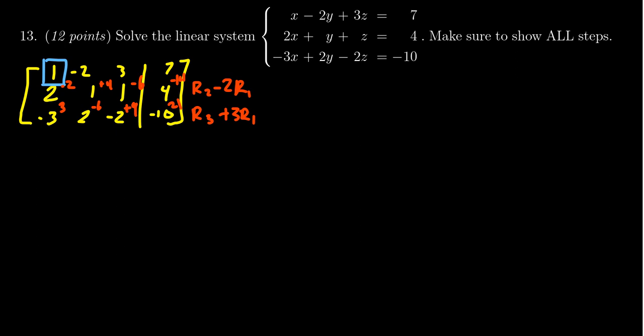So then we do these row replacements. The first row stays the same: 1, -2, 3 and 7. The second and third rows will change. You're going to get a 0 below the 1, 1 plus 4 is 5, 1 minus 6 is -5, and then 4 minus 14 is -10. I can see in that row I already have everything divisible by 5, so my next thing is I'm going to take row 2 and divide everything by 5.